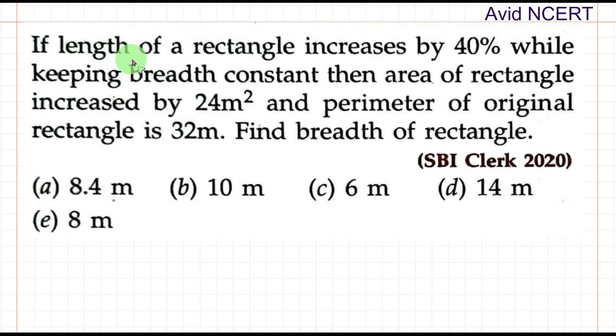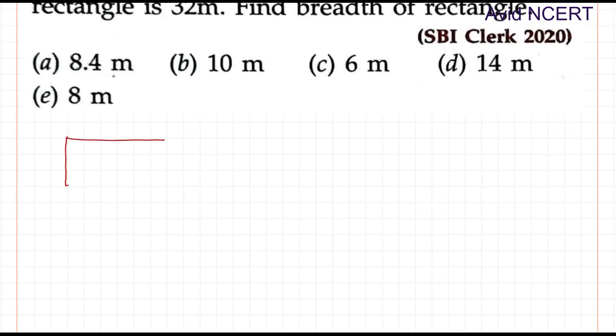To find this, from the first sentence: if the length of a rectangle increases by 40% while keeping the breadth constant. In a rectangle, the length is increased by 40%. This is the actual length and this is the actual breadth. The new length, L', would be L plus 40% of L, and the breadth is kept constant, so B is the same.